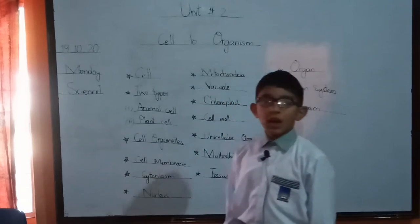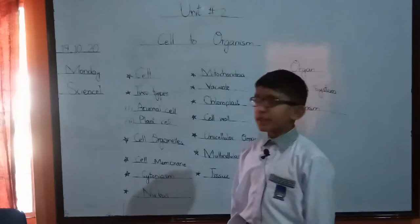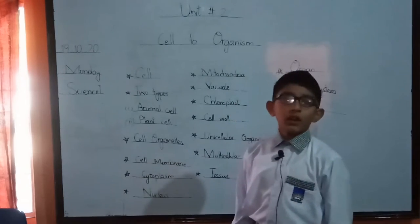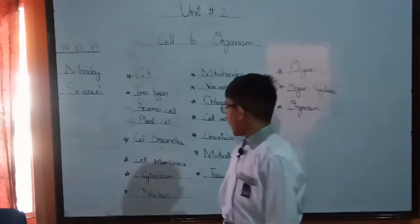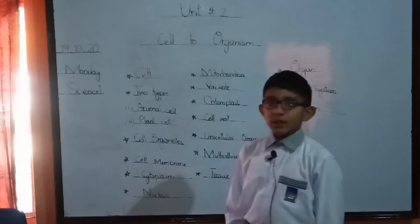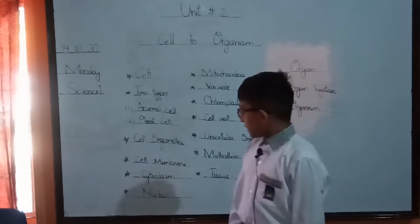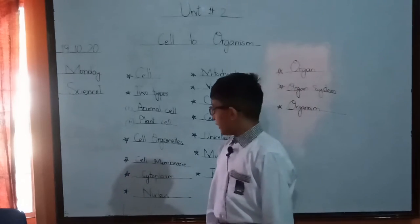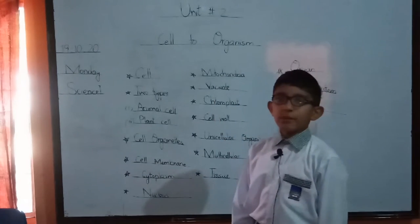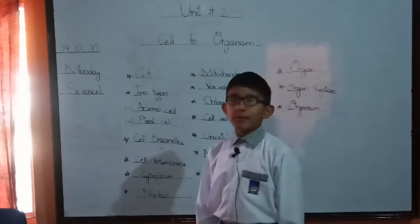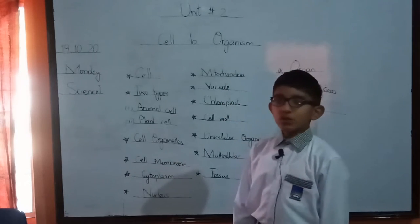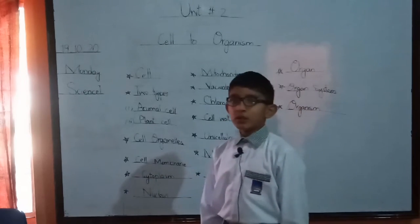There are small units in the cells that perform their own functions. Cell membrane. Cell membrane is a semi-permeable membrane. It can pass through some material and fluid.